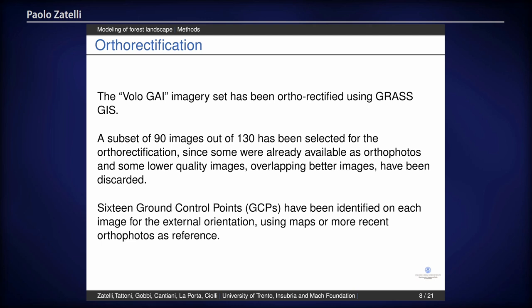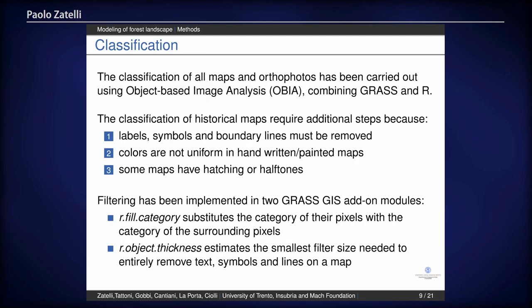We found at least 16 ground control points for each image. If you have tried this in a mountain region, it is very difficult because you have to identify buildings and roads which existed in 1954 and still exist nowadays, so you can use the coordinates of the current location to identify the points. This is a very time-consuming task. Once we have all the historical maps and all the orthophotos, the next step is obviously to classify them.